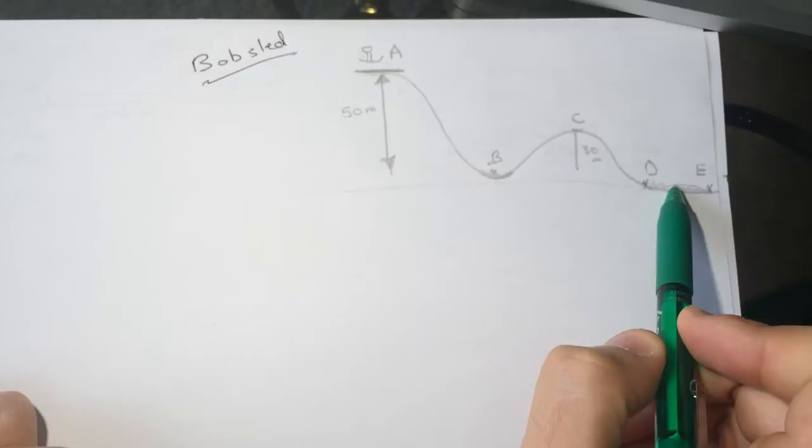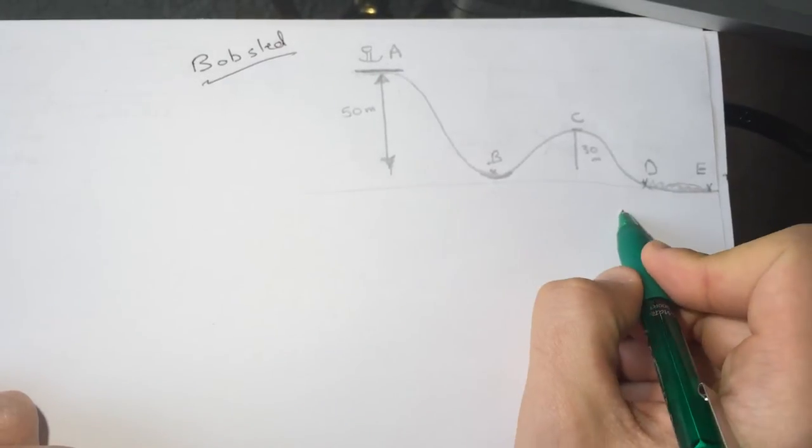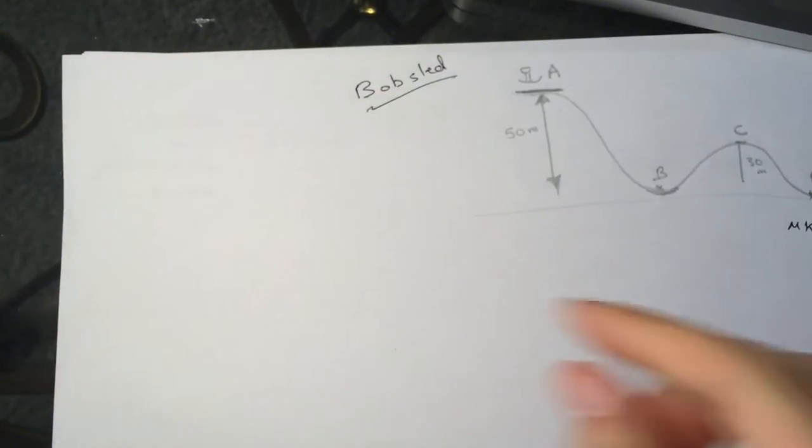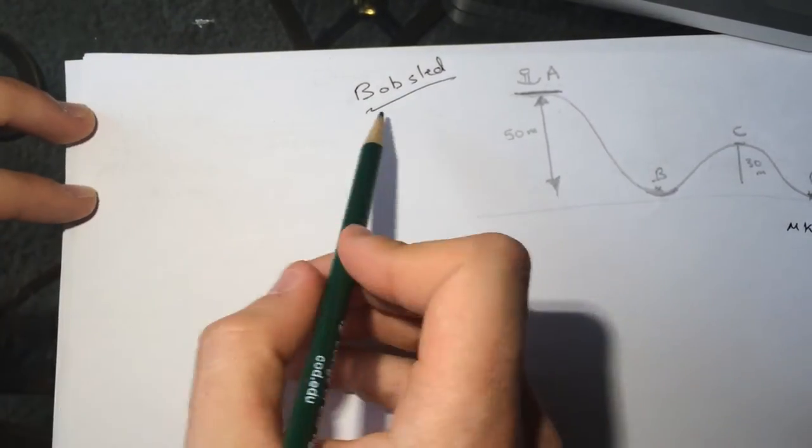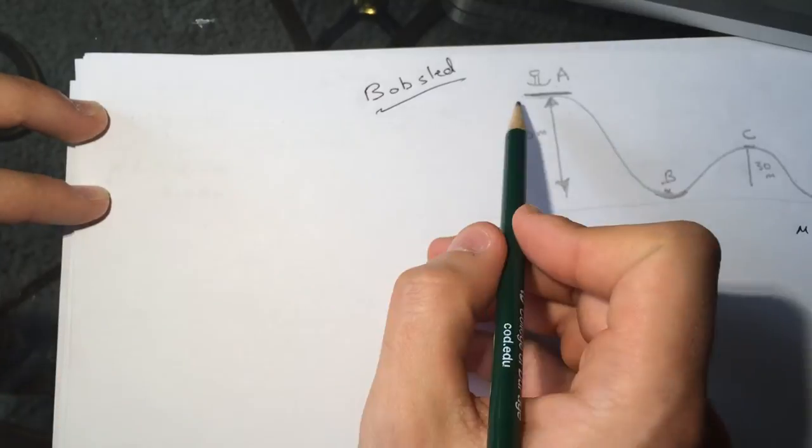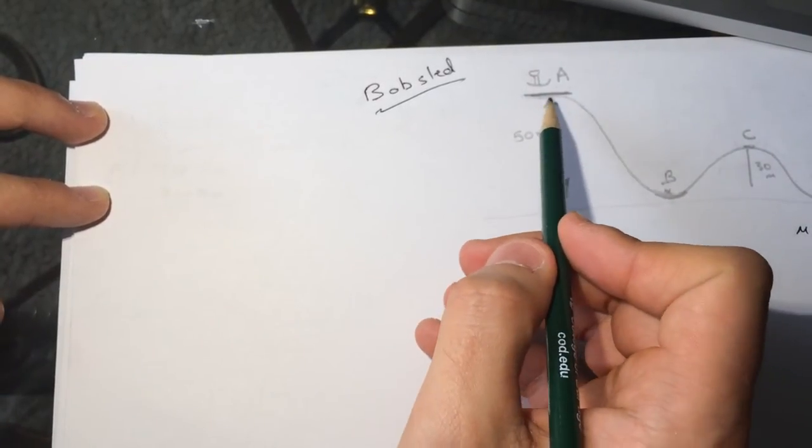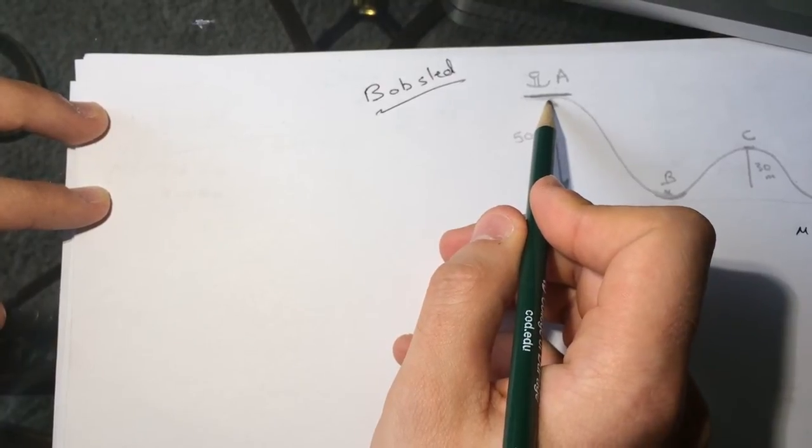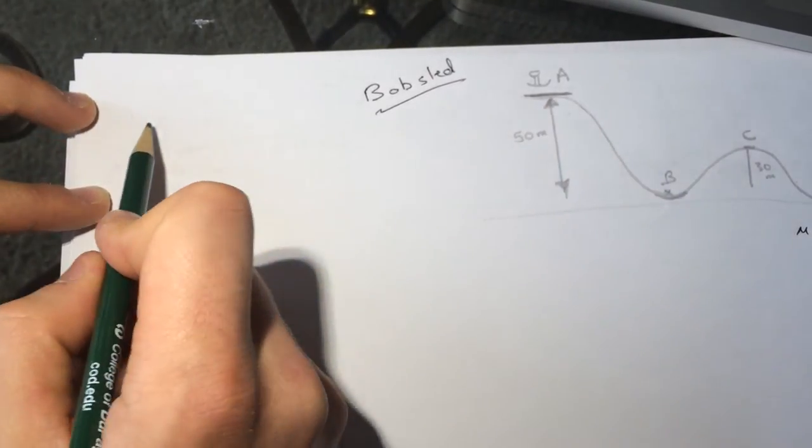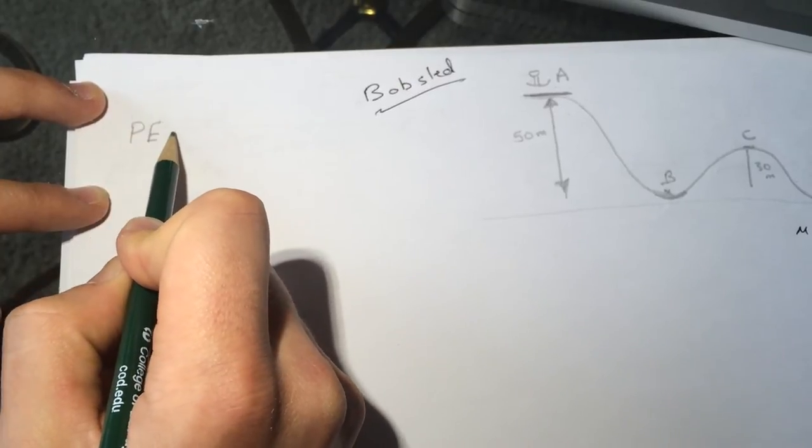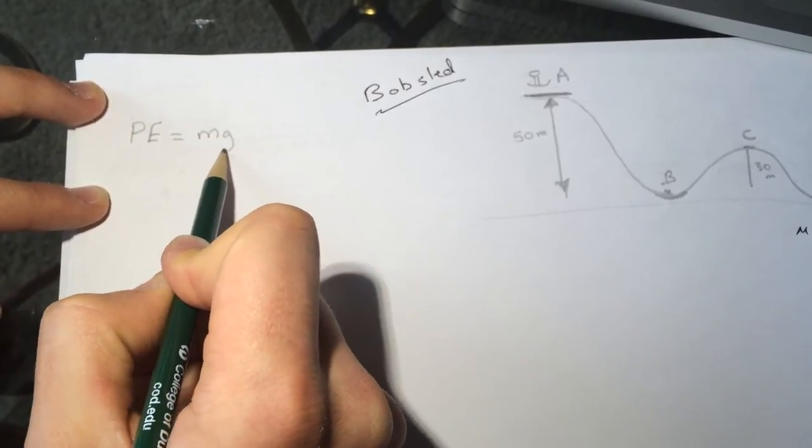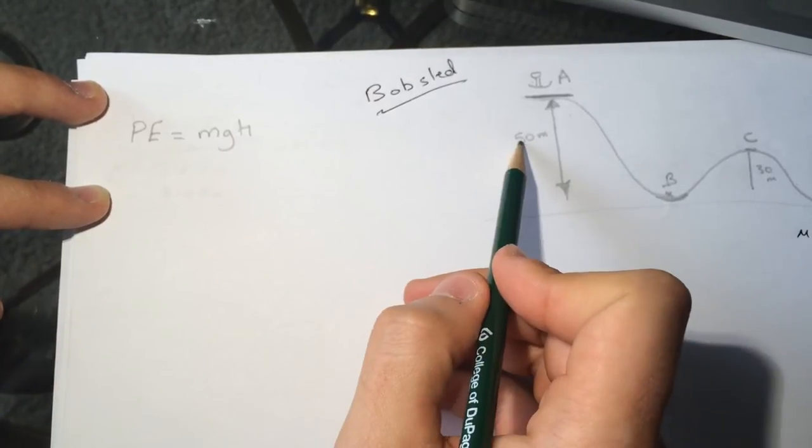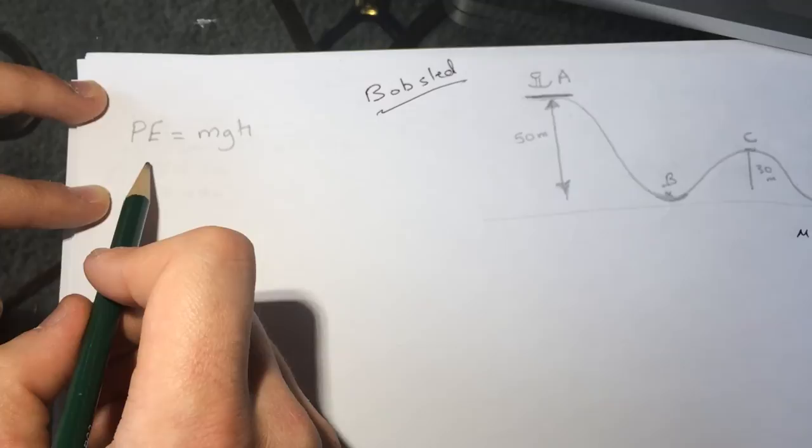There's friction here and we have the UK here. So what is the total potential of the system? Since it's starting from up here without moving, it will be all potential energy which is MGH, and the H here is 50 meters.